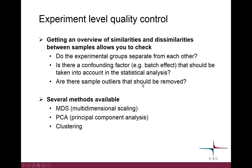There are several methods you can use for experiment-level quality control. They are mostly based on dimension reduction methods. We look at MDS plots and PCA plots — multidimensional scaling plots and principal component analysis plots — and then some basic clustering.